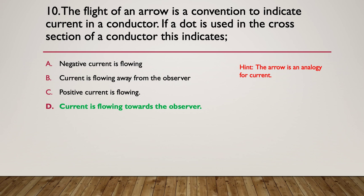The answer is the current is flowing towards the observer. It's as though the arrow is coming straight at you, and all you can see is the very point of the arrow. If you could see a cross, it would mean you'd see the flights of the arrow and the current is traveling away from you. But in this case, the current is traveling towards you.